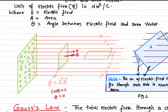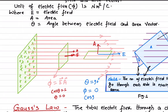For this second surface, the area vector points in a direction such that the angle between the electric field and the area vector is 90 degrees. So the flux passing through this surface would be zero, because cosine 90 degrees equals zero. By definition, flux is E times A times cosine theta, and with theta equal to 90 degrees, the flux is zero.